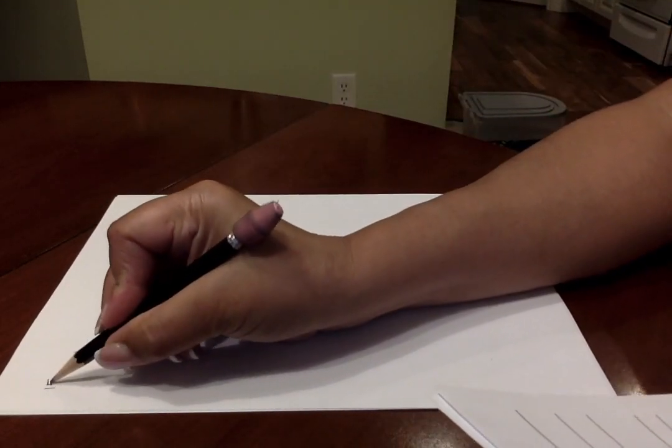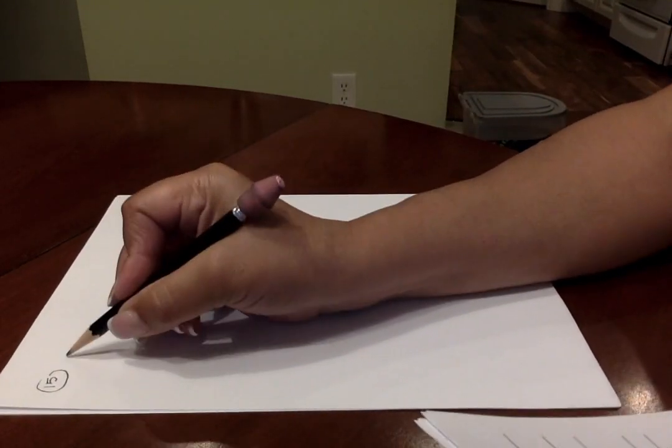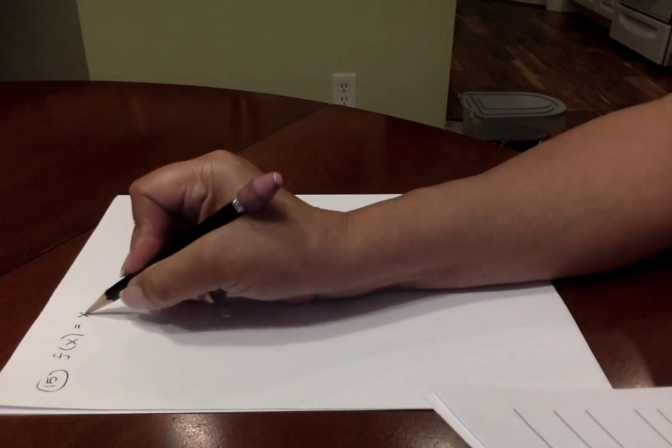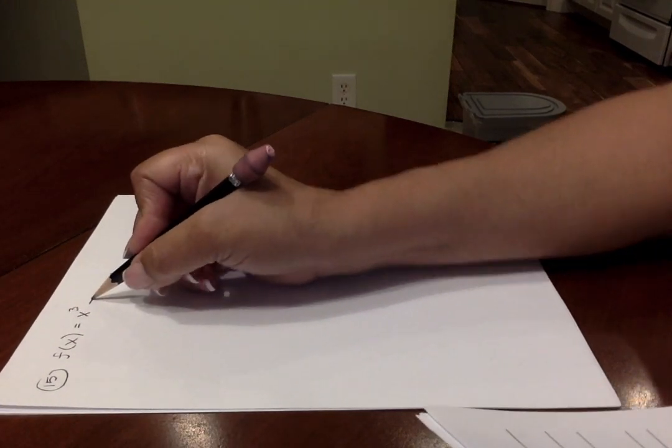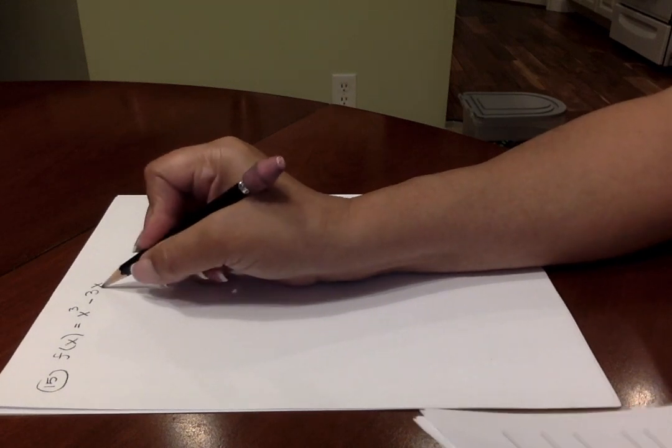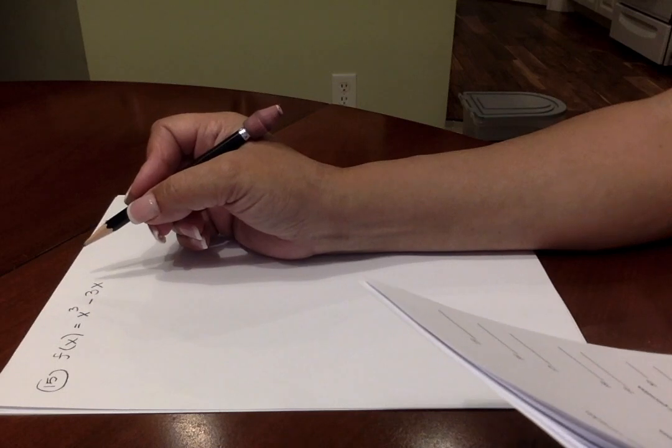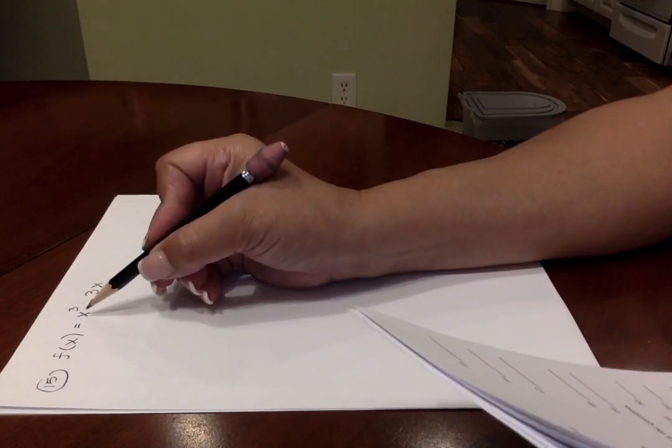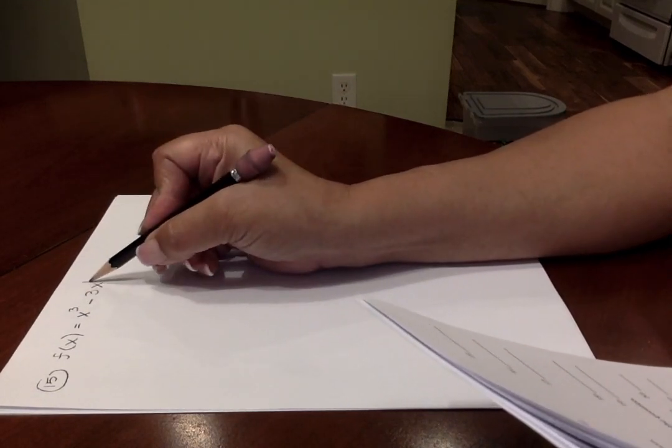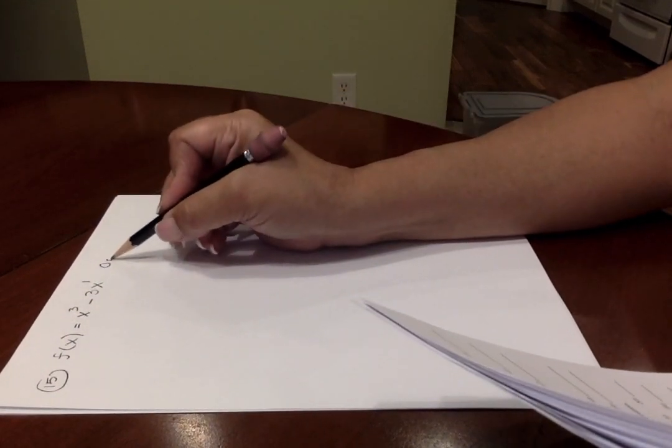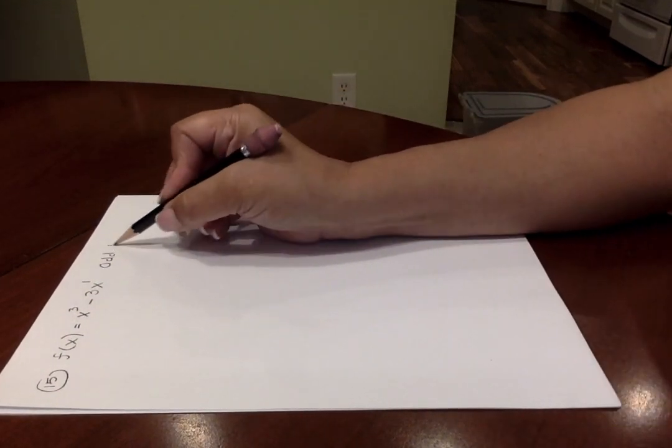Moving on to number 15. In number 15, you are given the function F of X is equal to X cubed minus 3X. It asks whether this is even, odd, or neither. You can look at the powers to answer this question. This term is an odd power, this term is an odd power, and since all the powers are odd, this can be called an odd function.